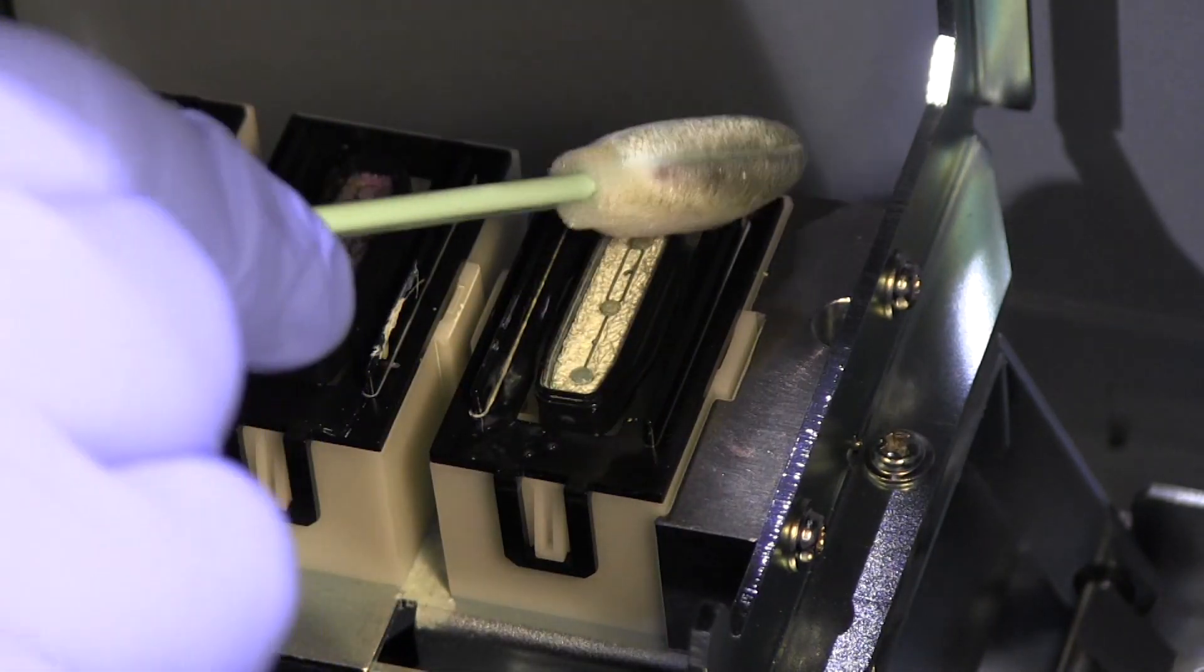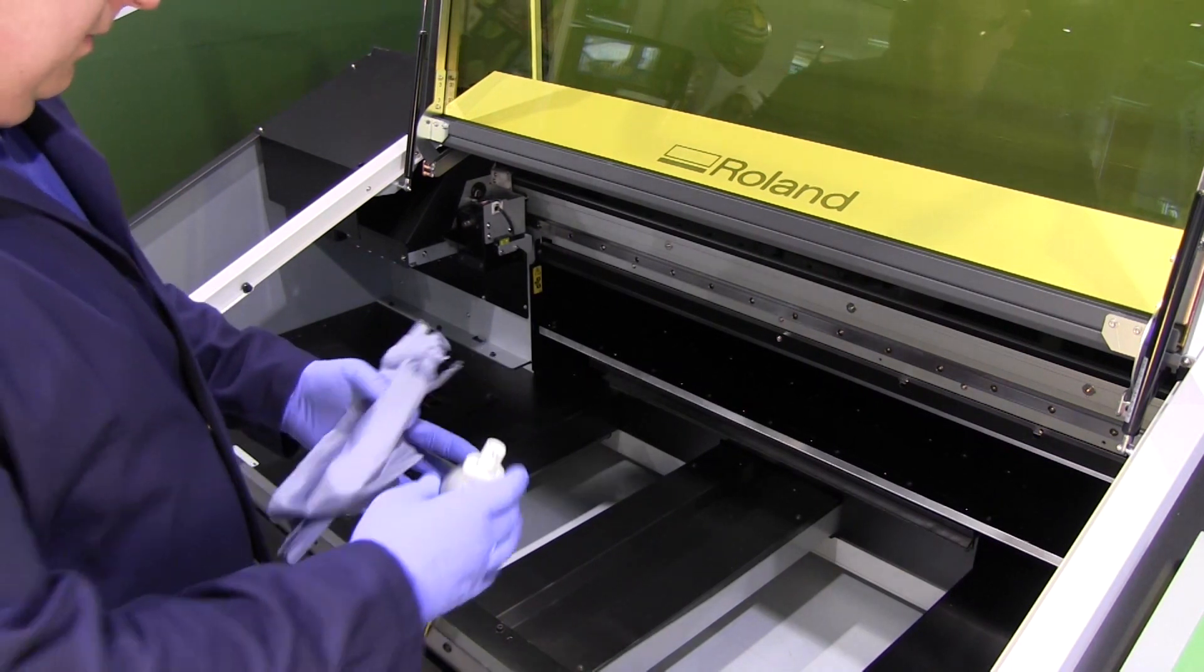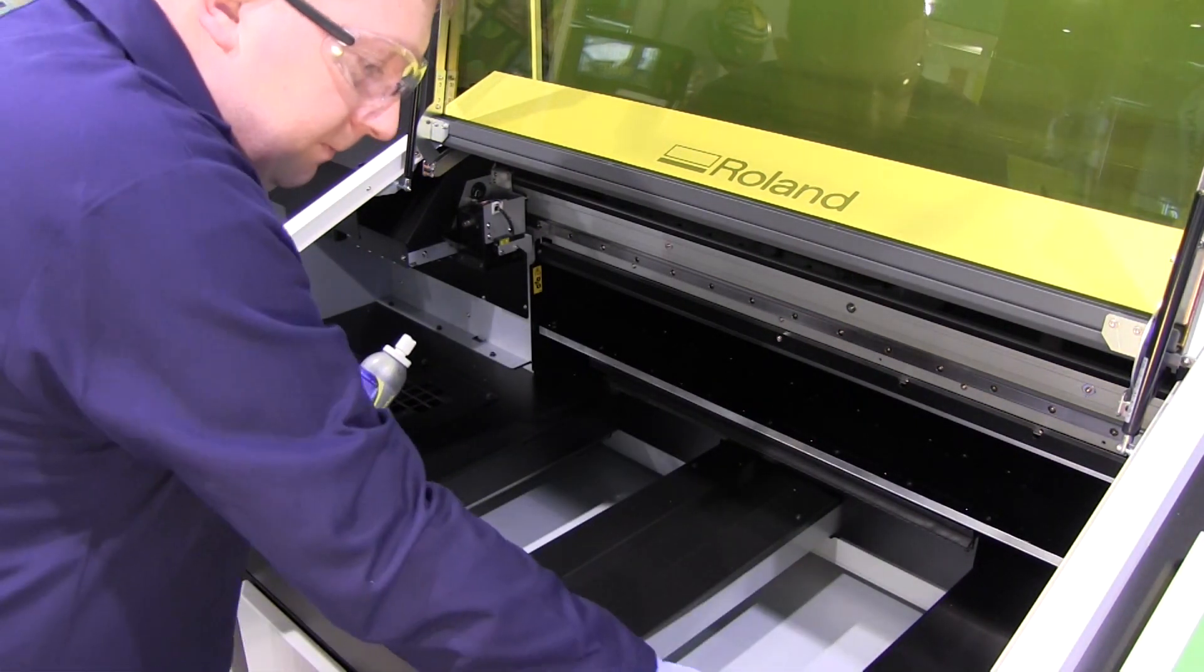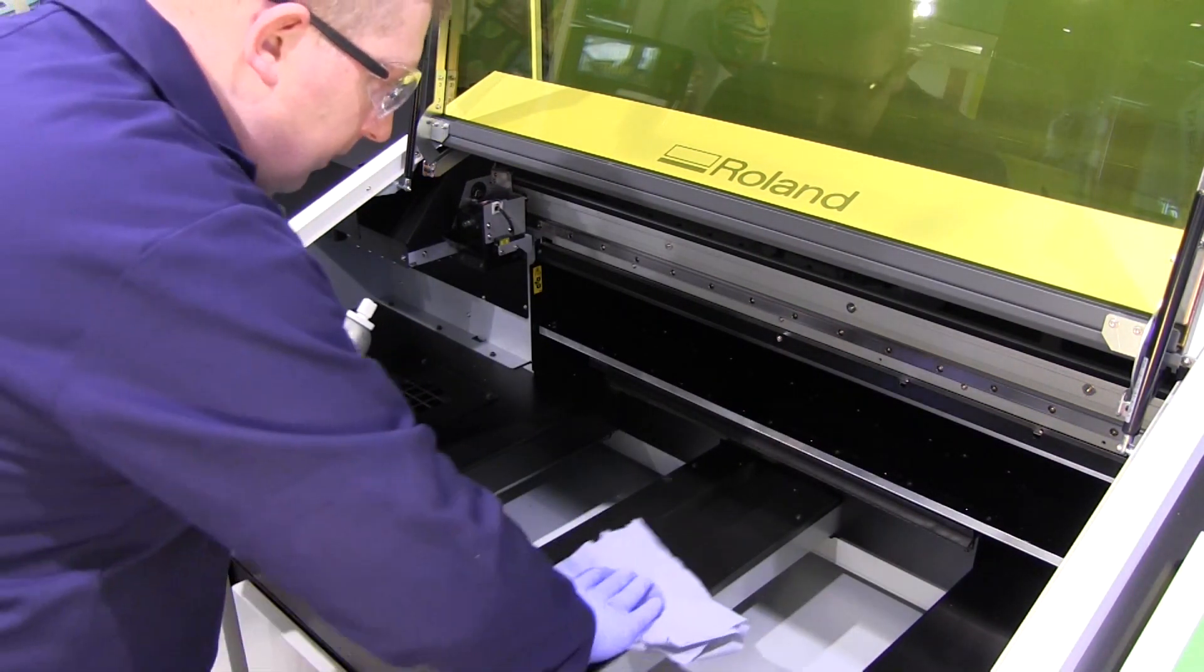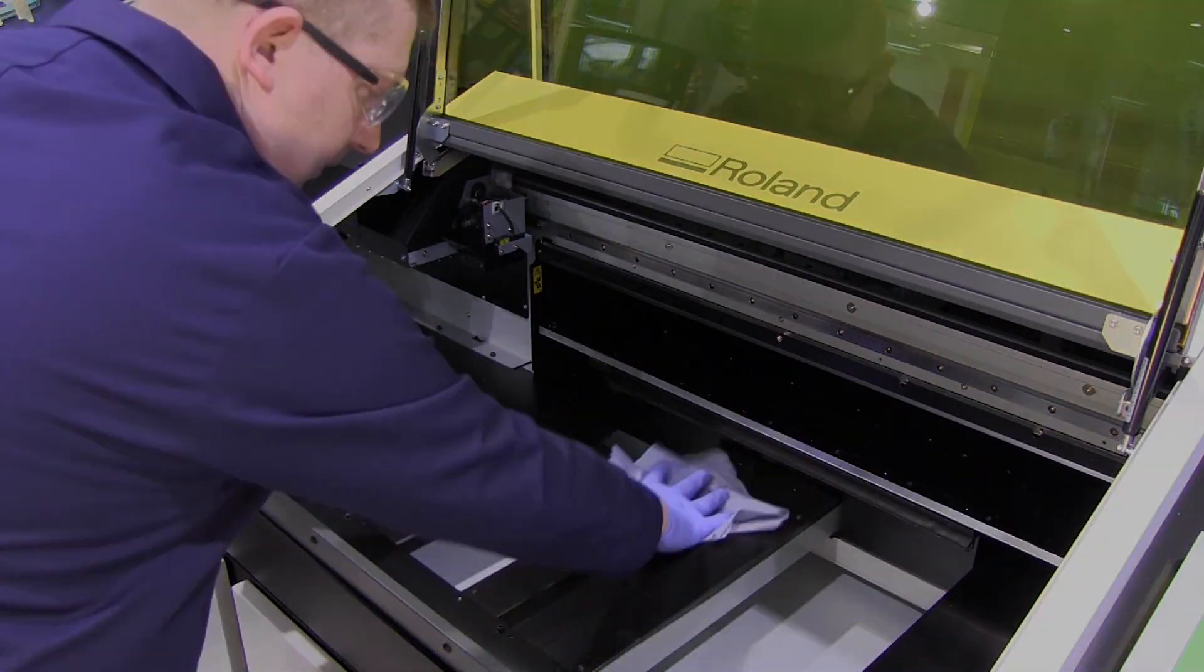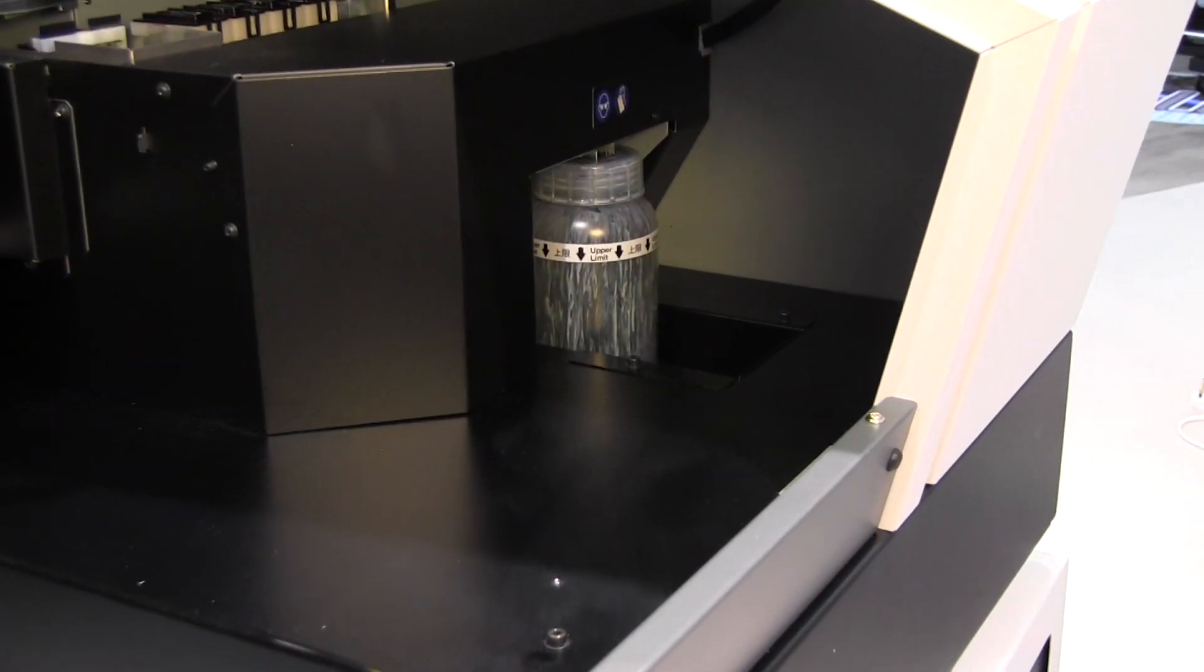Now you can clean any other parts of the machine. If you see ink on any of the other surfaces within the machine, you can use the cleaning solution and swabs to wipe it away. Be sure to check the waste ink bottle before finishing.